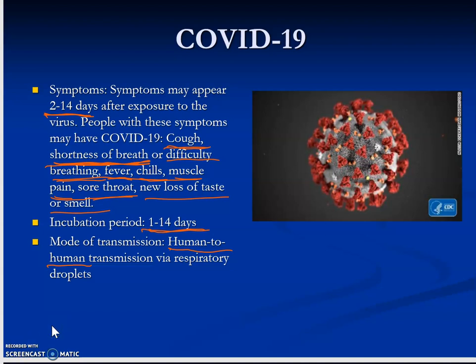The mode of transmission is human to human via respiratory droplets, and also fomites — things like door handles, or anything that is commonly touched, like a credit card touchpad or a bank terminal. Anything that a lot of people touch would count as a potential way to get the coronavirus.